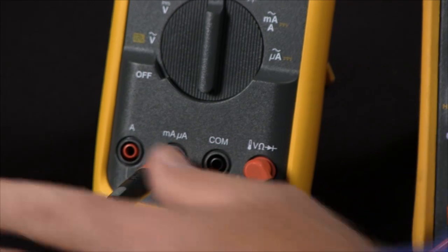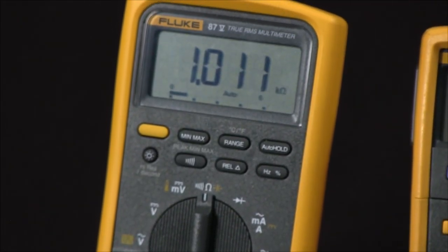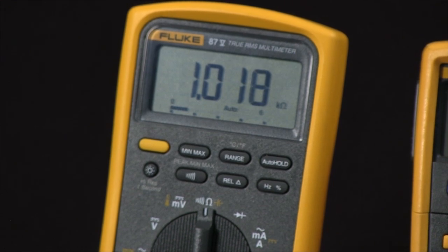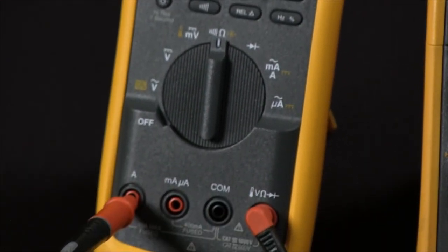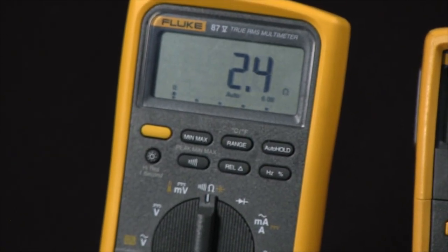In the milliamp jack, we have a slow blow fuse, so you'll typically see about 1000 ohms on the reading. If we go into the amps input jack, we'll get a much lower resistance reading because it's simply an inline fuse.